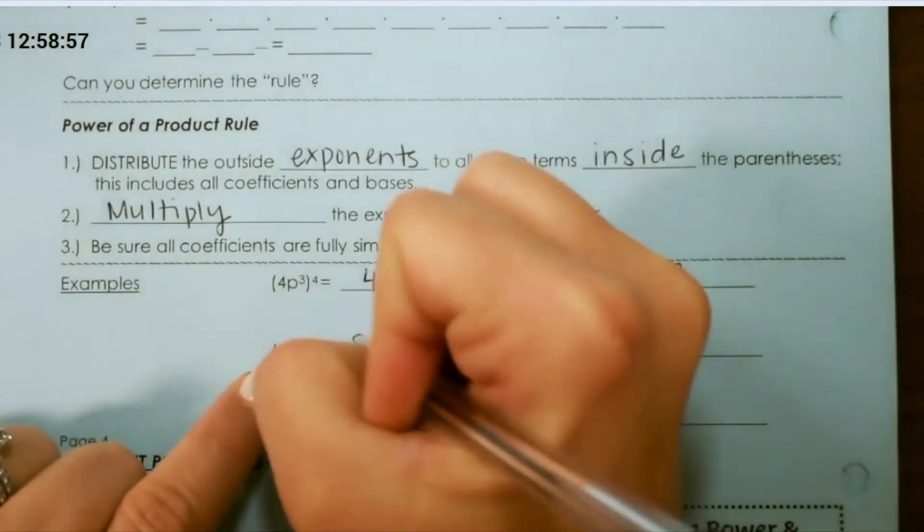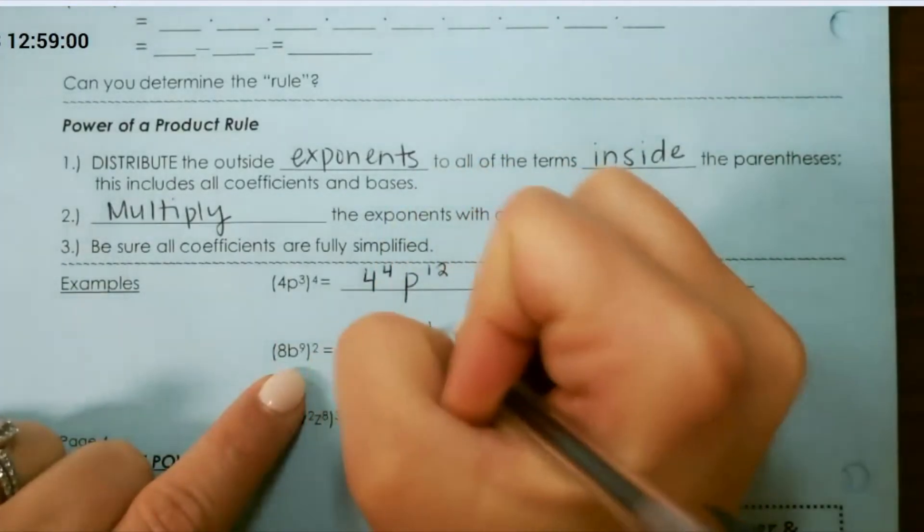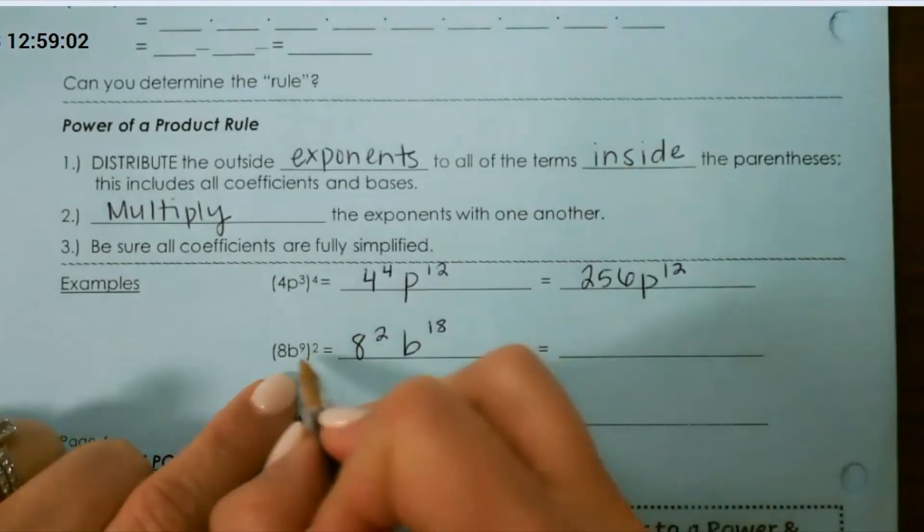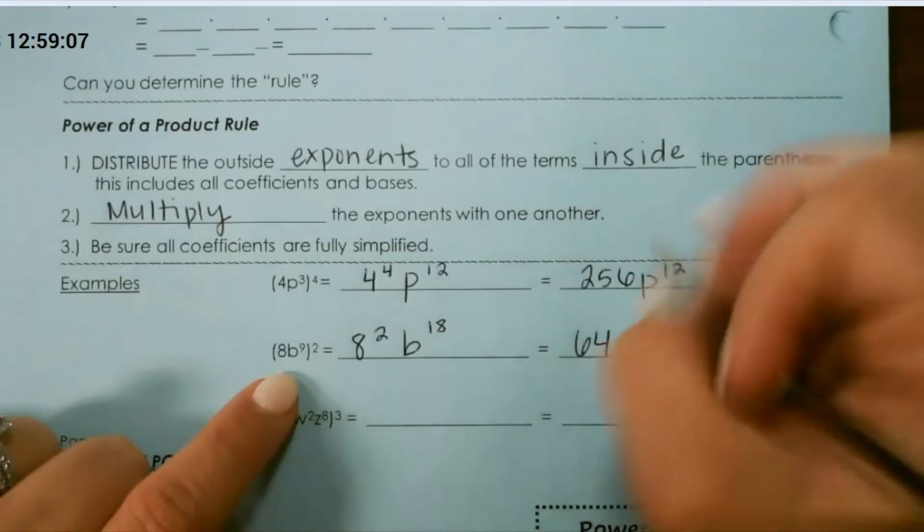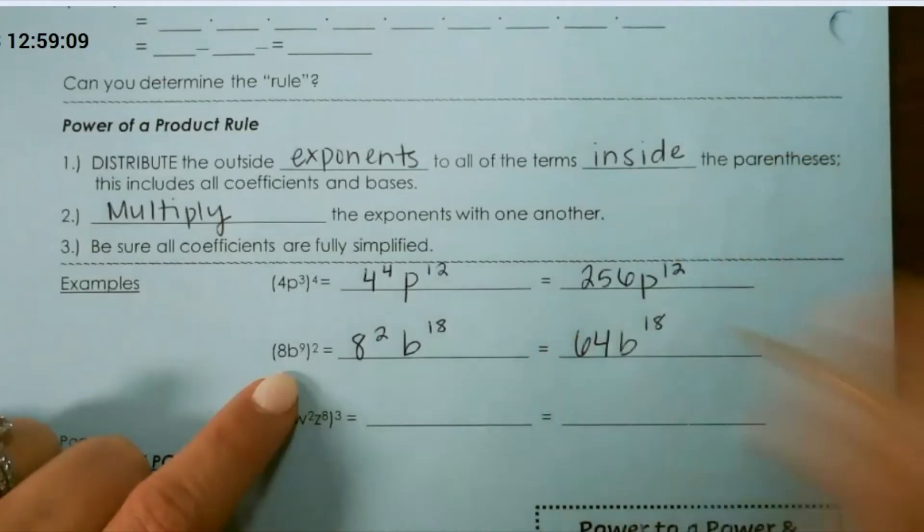we would have 8 to the second power and b to the eighteenth power because 9 times 2 is 18. We can evaluate 8 squared as 64, b to the eighteenth power.